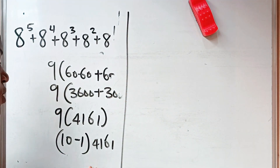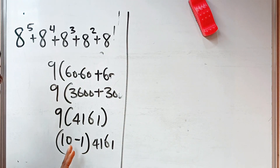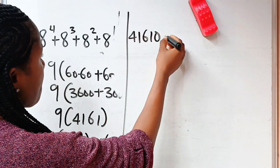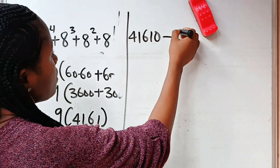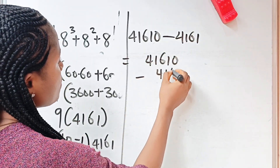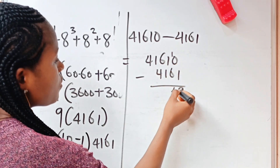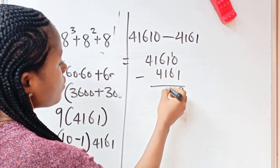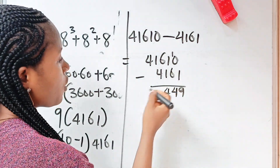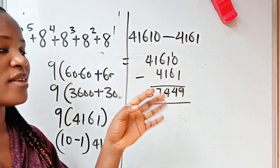Now, 4,161 times 10 gives us 41,610. Minus 4,161 times 1 is 4,161. Let's solve: 41,610 minus 4,161. We get: 0 stays, 10 minus 6 gives us 4, 5 minus 1 gives us 4, 11 minus 4 gives us 7, then we have 3. So this becomes our final answer without a calculator: 37,449.